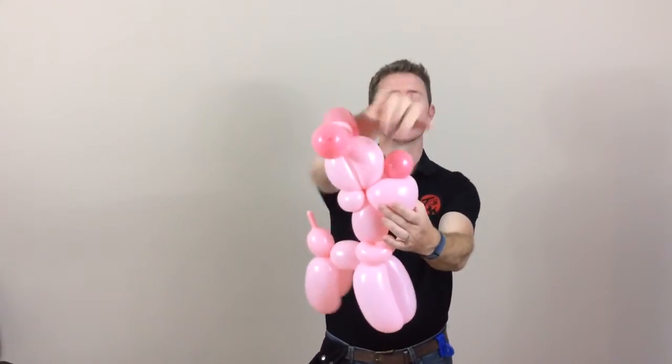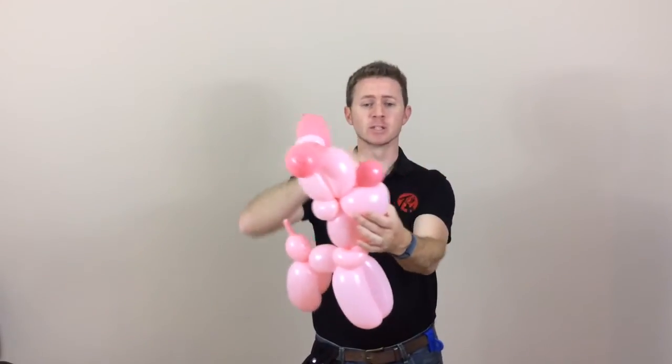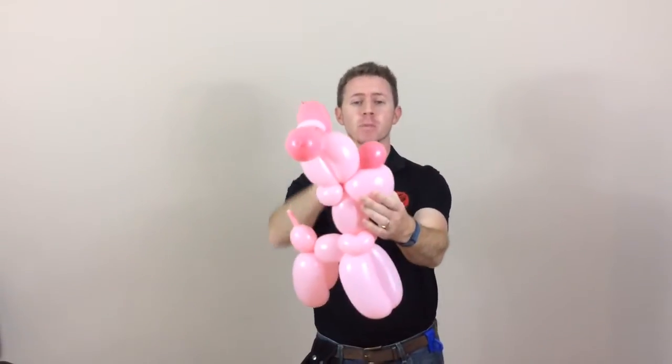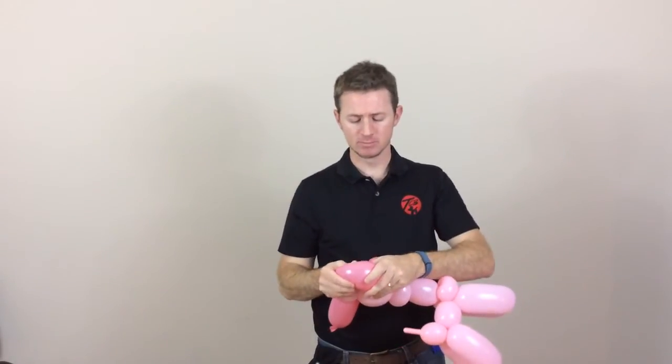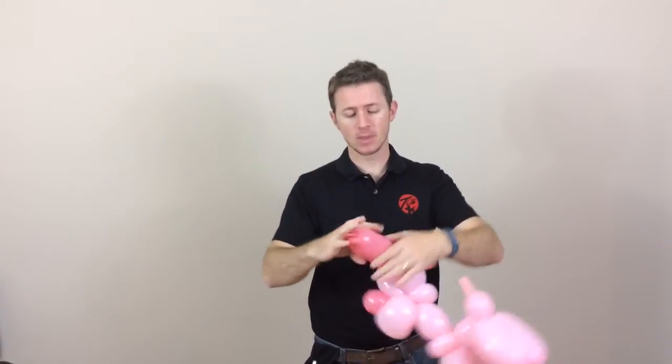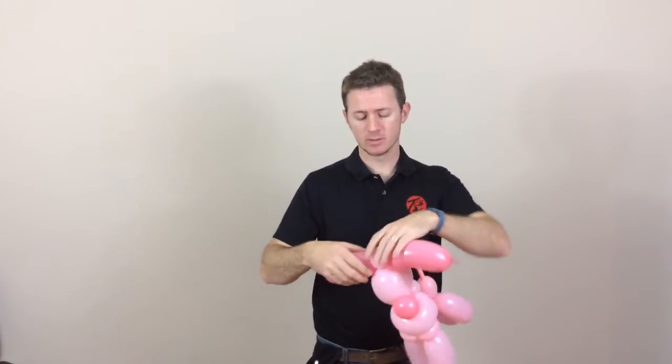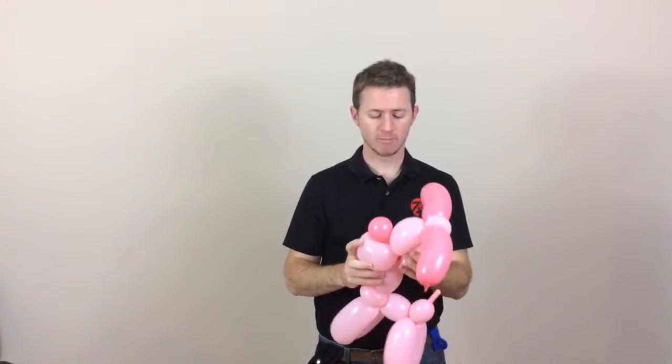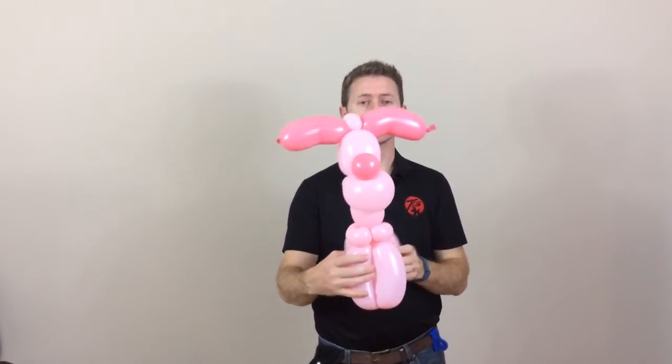Now notice how it's actually touching there. You don't want to make your loop twist too big so that it's out in front and then gets pulled back. There'll be a gap here. So that's how it's supposed to look. Then just shape the ears a little bit. And that's your dog.